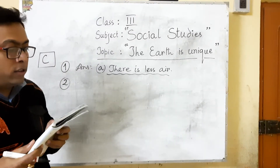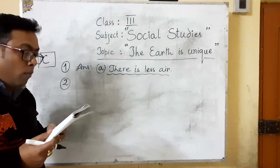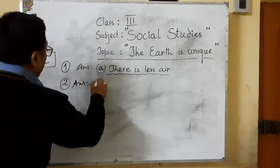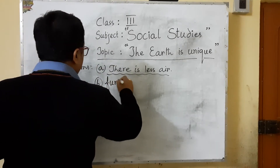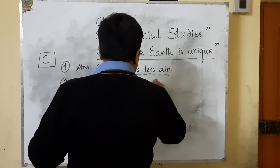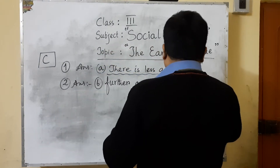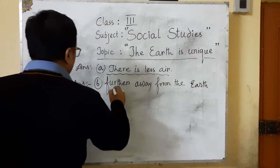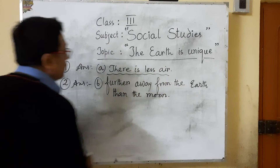Number two: the sun is as far away from earth as the moon, or farther away from earth than the moon? The answer is — farther away from earth than the moon.